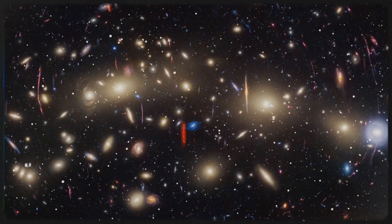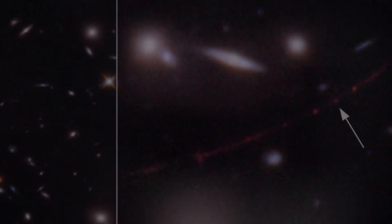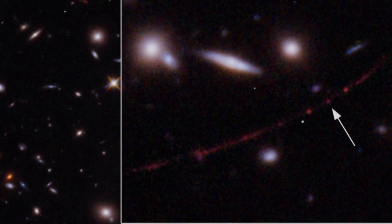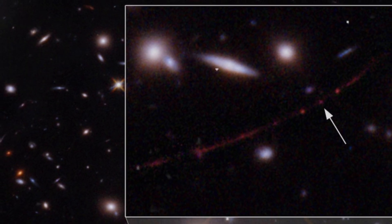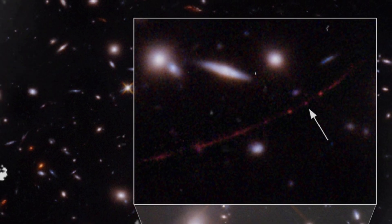Until now, we've only had theories about the first stars, no definitive proof. Eärendel was expected to provide that proof, but then the James Webb Space Telescope came along and shook things up. So, what exactly did Webb discover about Eärendel?